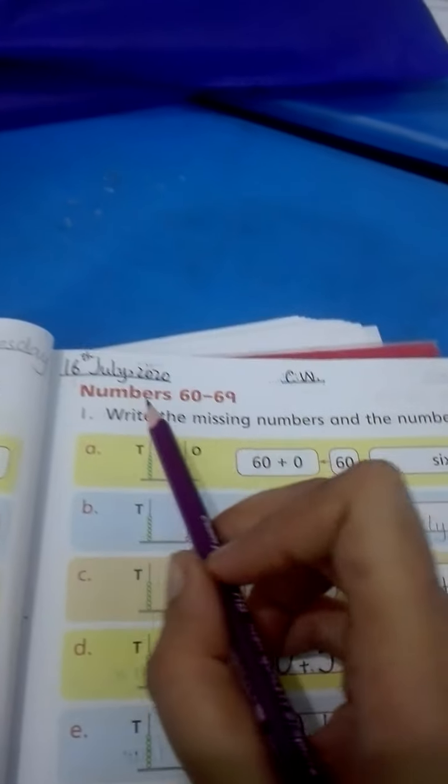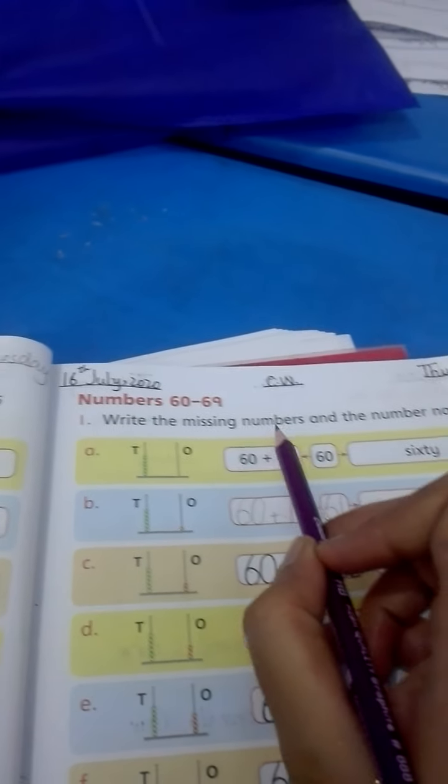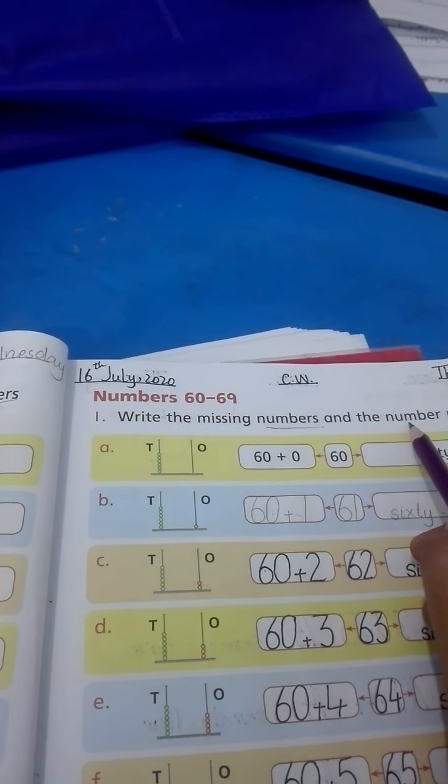On page 33 we will do today's topic which is numbers 62-69. Write the missing numbers and the number names. So students, as you remember, we have written number names before.